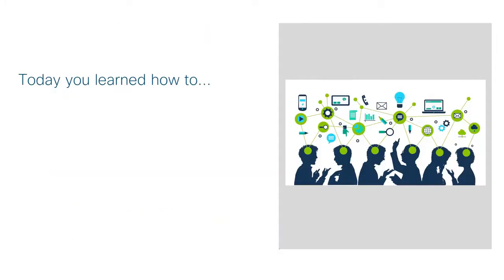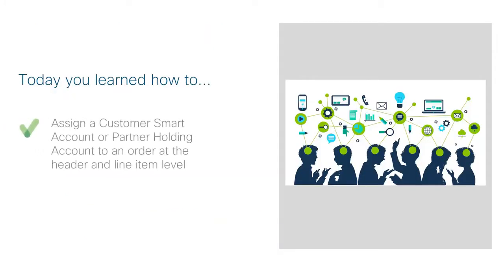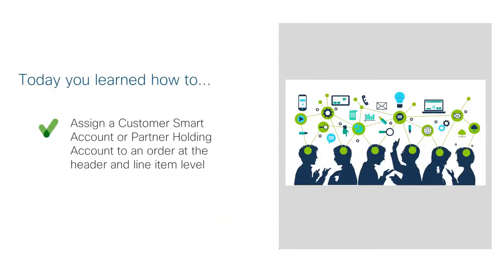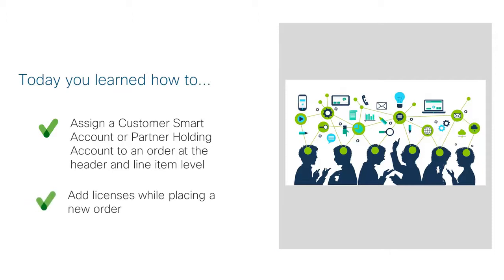You have now successfully learned how to assign a customer smart account or a partner holding account to an order at the header and line item level, and how to add licenses while placing a new order. Thank you for your time and continue to engage with Connecting the Dots, our smart account and smart license learning series.